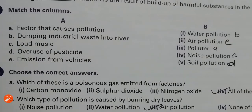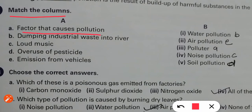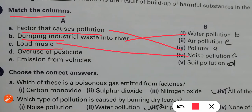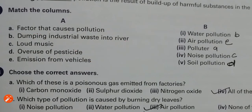The 'match the column' exercise: a factor that causes pollution is a polluter. Dumping of industrial waste into the river causes water pollution. Loud music causes noise pollution. Overuse of pesticides causes soil pollution. And gases from vehicles cause air pollution. Match the column is clear.